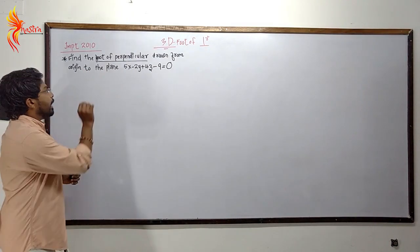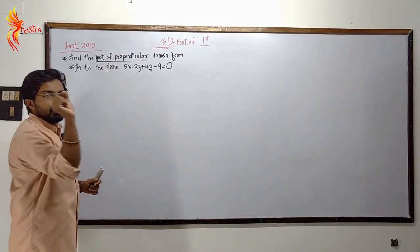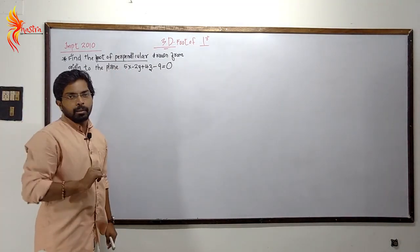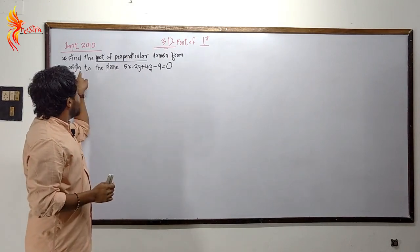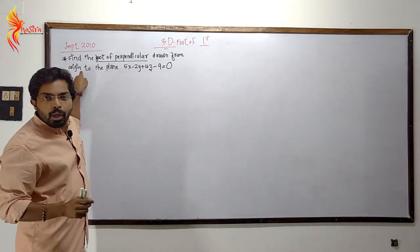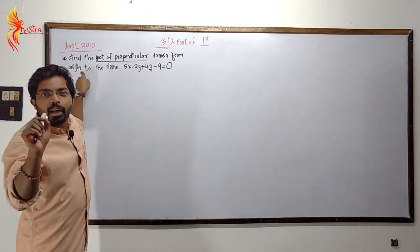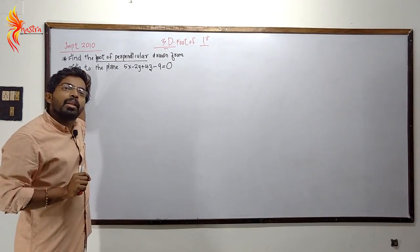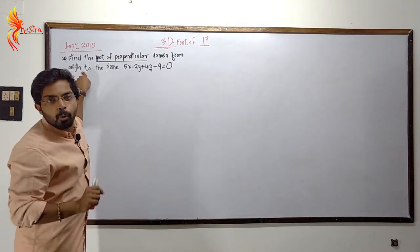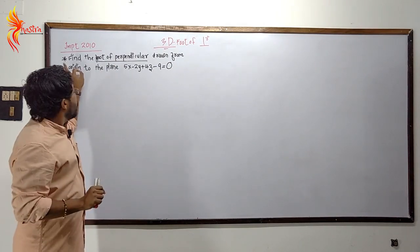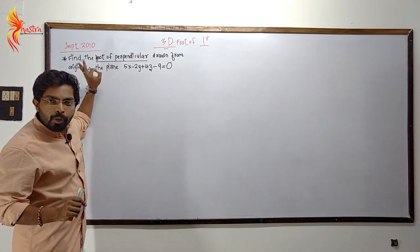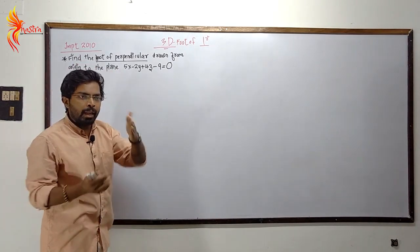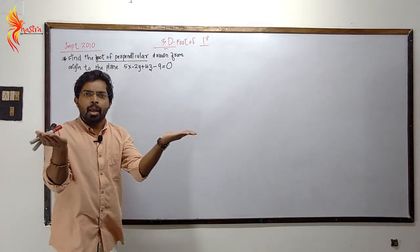When you look at the diagram, this is the foot of perpendicular. We have the origin here. Even in 3D, this point is the origin at (0,0,0). And over here we have the plane.